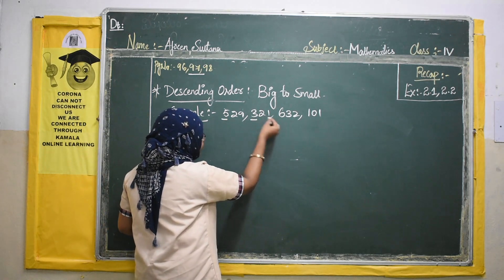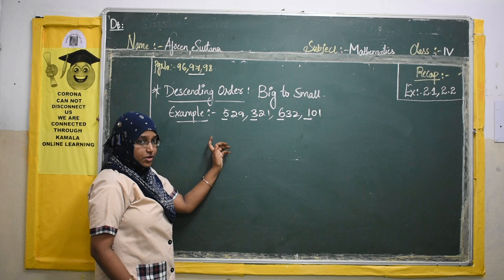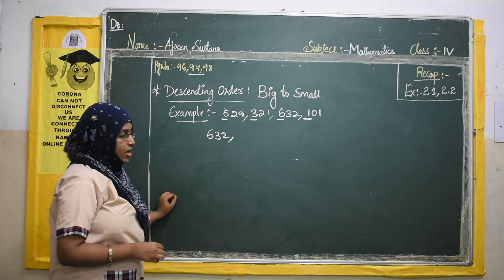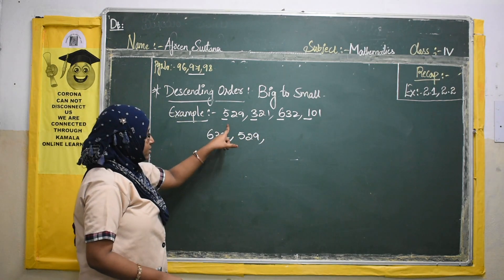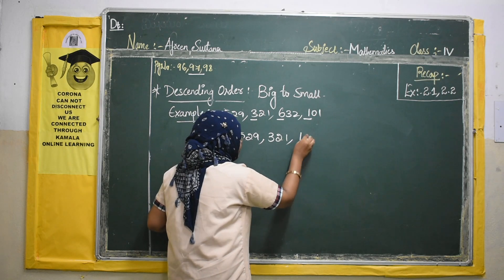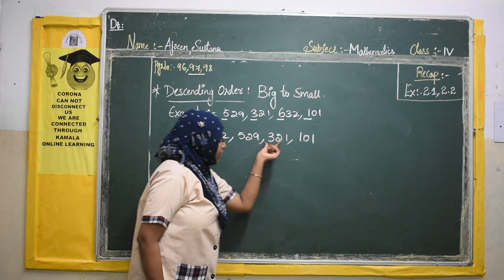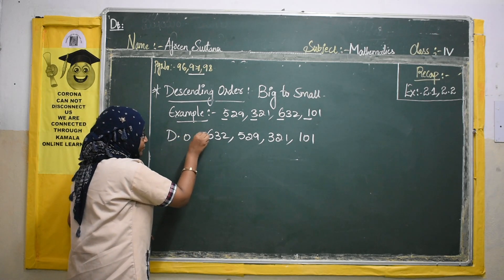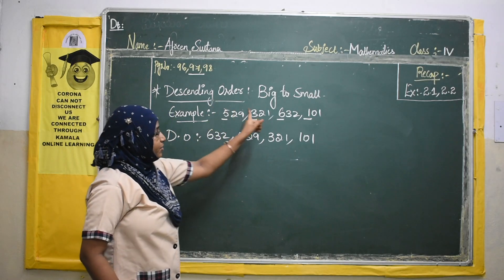For descending order, we look at the first digits: 5, 3, 6, and 1. The greatest first digit is 6, so we write 632 first. Next is 5, so we write 529. Then among the remaining, we have 3 and 1; 3 is greater, so next is 321. Lastly we write 101. So descending order is: 632, 529, 321, 101 — writing from biggest to smallest.